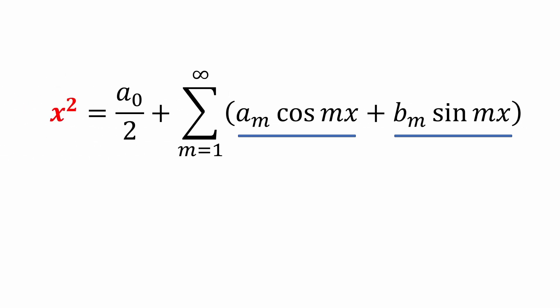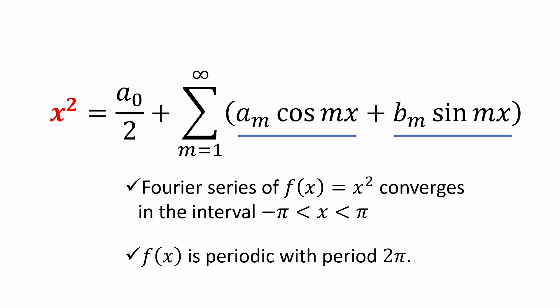We should also set a few ground rules before we begin. We'll assume the series of x squared converges in the interval from negative π to π and that the function is periodic with period 2π.